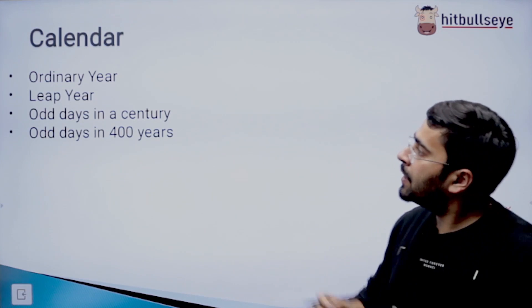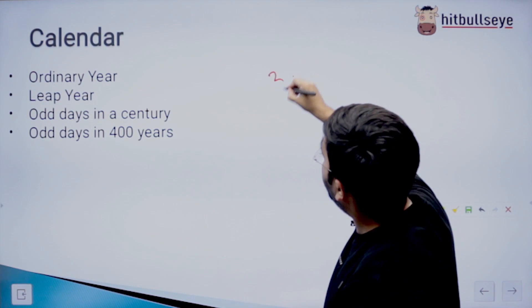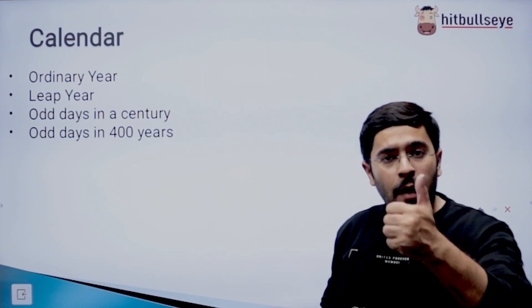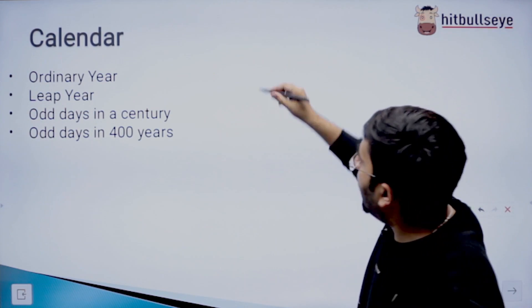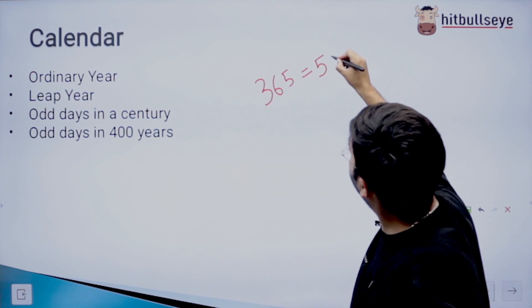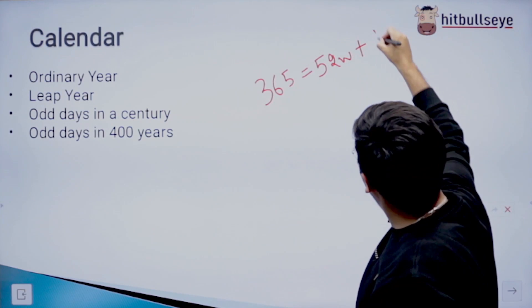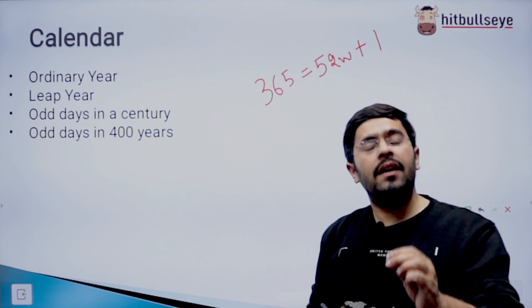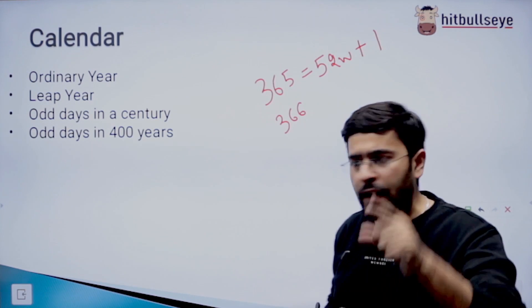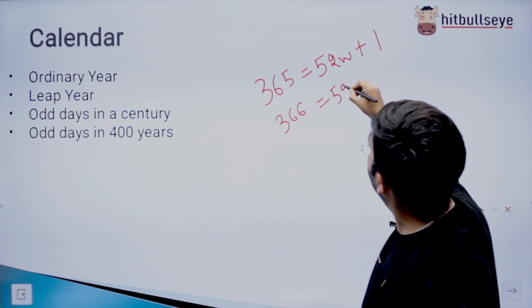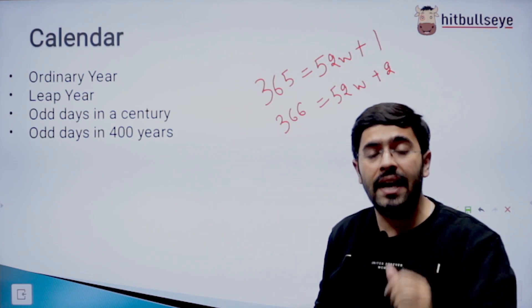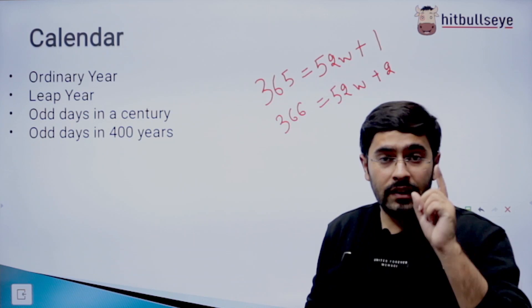Now coming on to the calendar. What is an ordinary year? An ordinary year is a year that has 365 days, meaning that a total of 52 complete weeks plus one odd day. A leap year is that year that has a total of 366 days. We can write it as 52 weeks plus two extra days. Leap year ko yaad rakhne ka best method ye hai, that you divide that year by 4. If the remainder comes out to be 0, it means that year is a leap year.